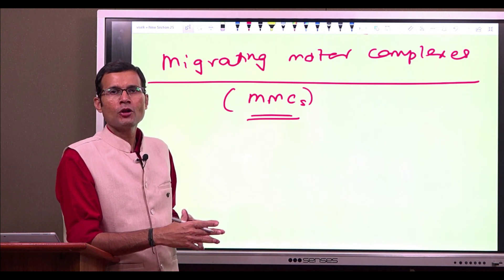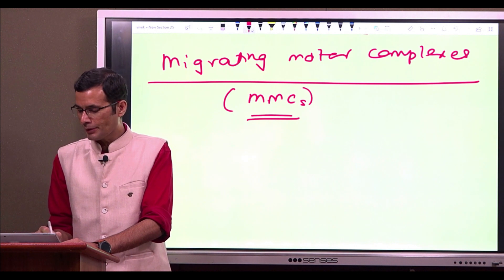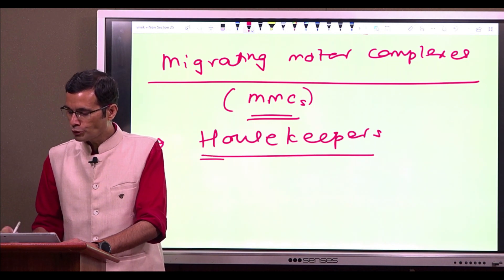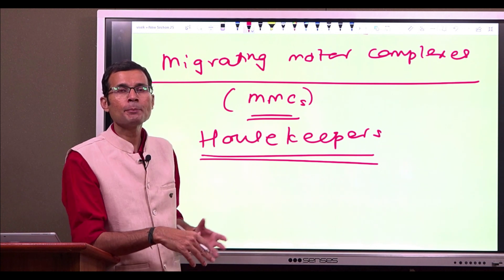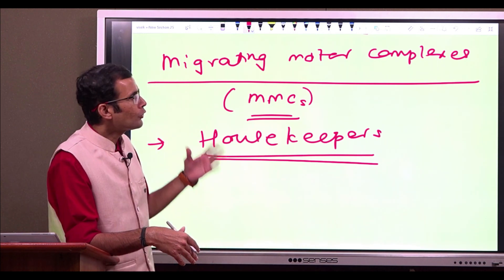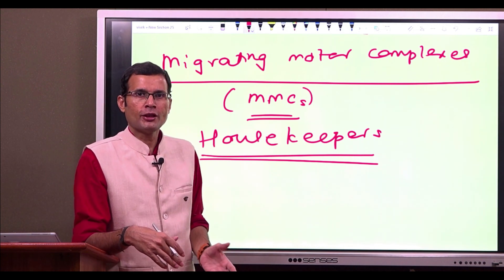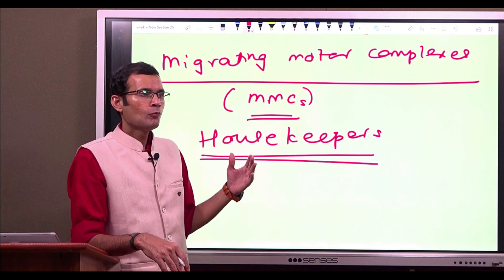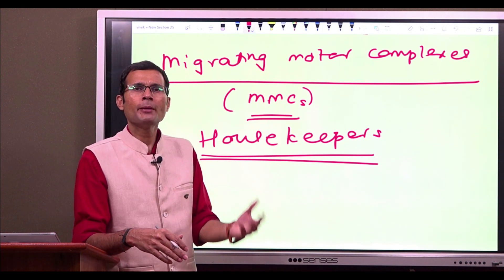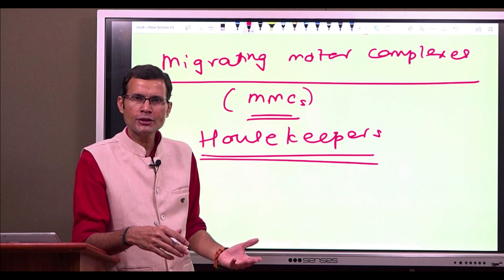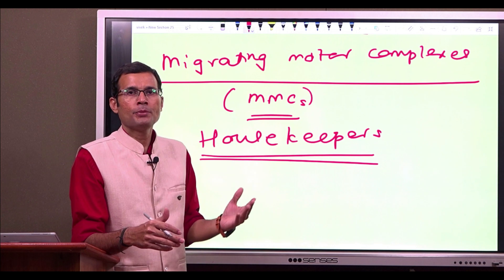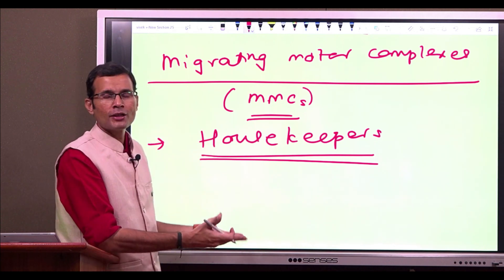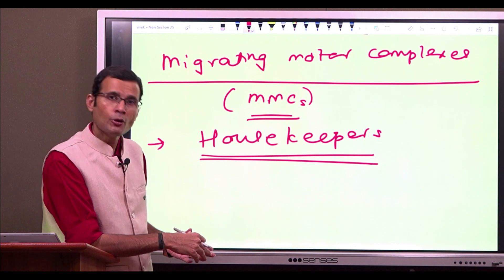What are these migrating motor complexes? First of all, remember they have been described as the housekeepers of the intestines — housekeepers of the gut — because they are essentially performing a housekeeping function. After eating foodstuffs, there is digestion and absorption of nutrients, and after that, whatever remnants, food debris, or digestive juices remain are all cleaned up by the migrating motor complexes.